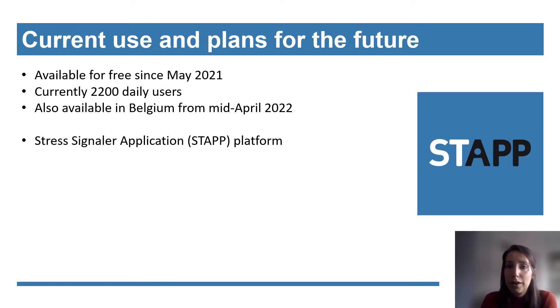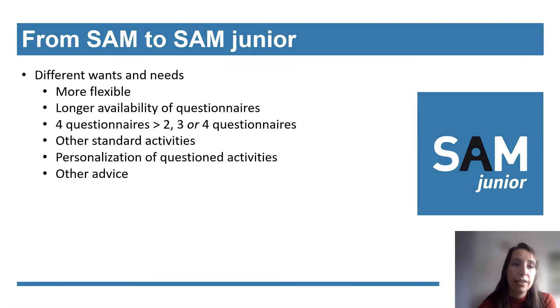With the SAM app, we're not yet finished with self-management apps as the key to a better life. We are setting up a platform for stress signaling apps, and we call it STOP, under which other self-management apps, for example for anxiety disorder, can run. At the moment we are busy developing SAM Junior, the youth version of SAM. In the transition from SAM to SAM Junior, we discovered different wants and needs for this new target group. The app is now more flexible. The daily questionnaires will be longer available to fill out, and the user can now choose whether they want to fill out the questionnaire two, three or four times a day. We included other standard activities and tried to make it more personalized. In this way, we try to meet the wants and needs from the user, because they are the people who will use our app.